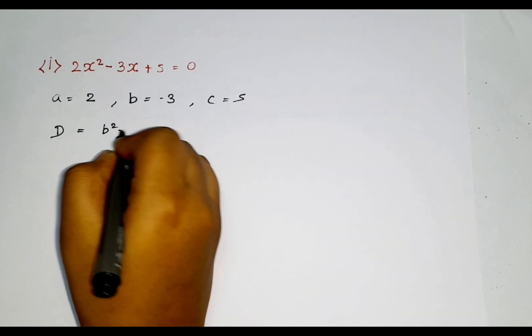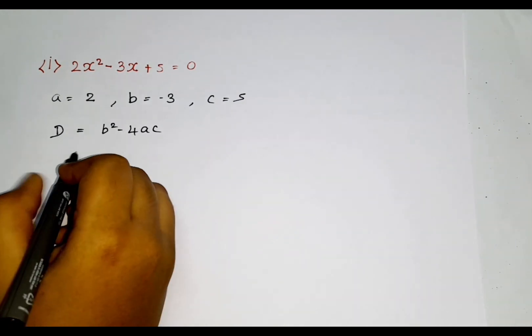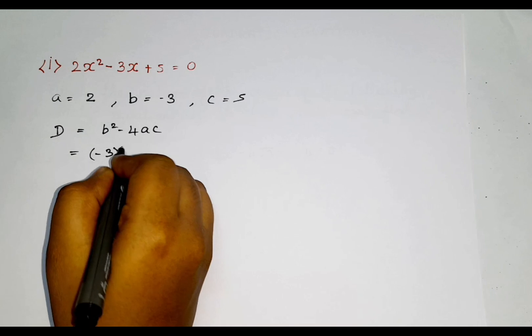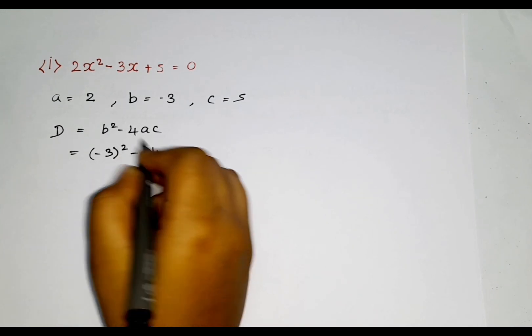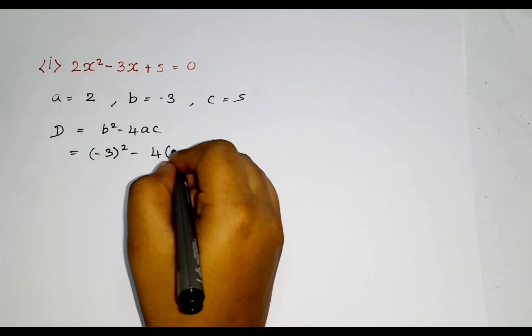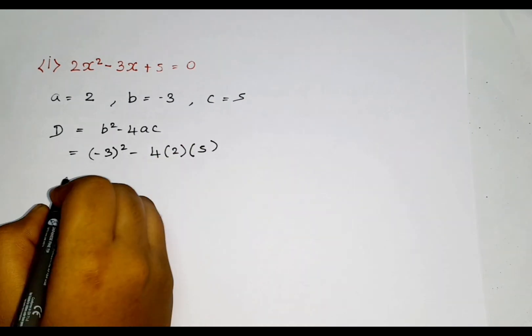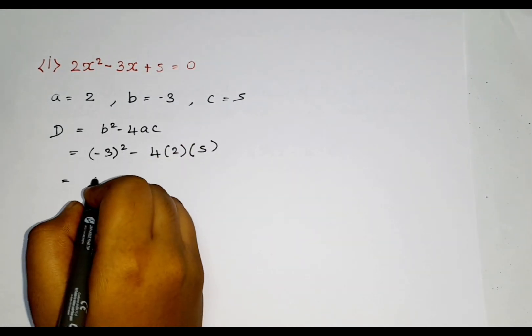Now let's apply the discriminant formula. That is B square minus 4AC. Is equal to B is minus 3. So, minus 3 square minus 4A is 2, into 2, and bracket C is 5. Minus 3 into minus 3 is 9.